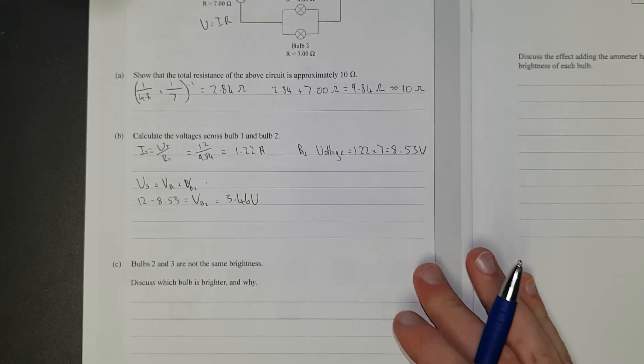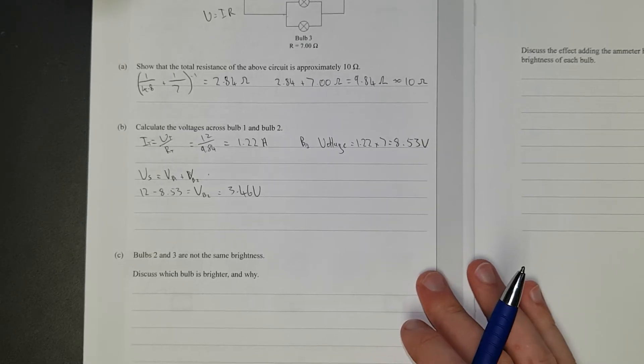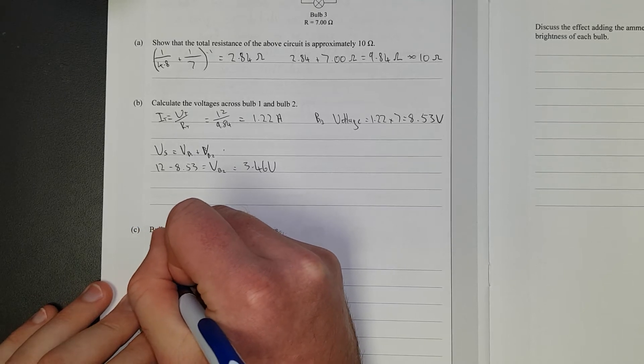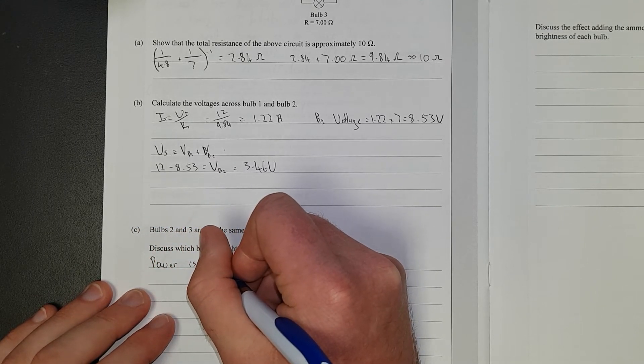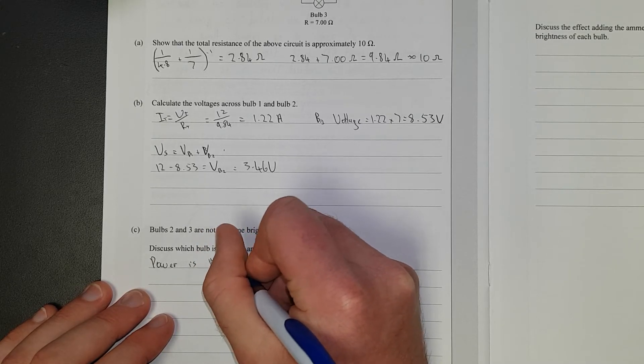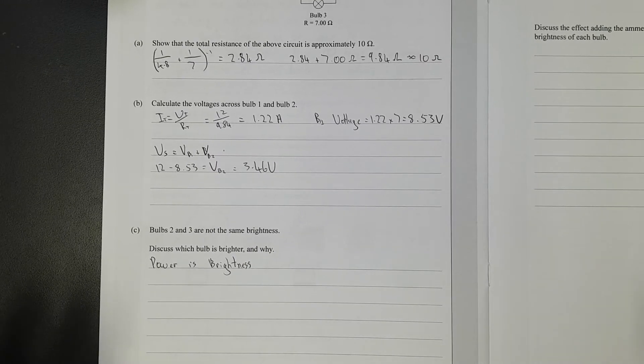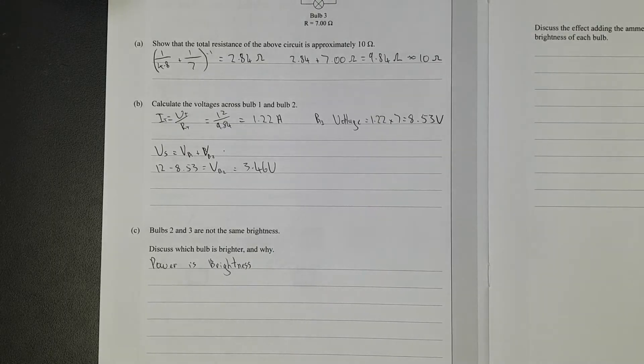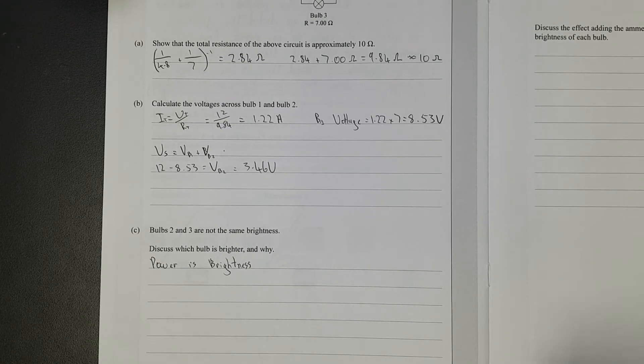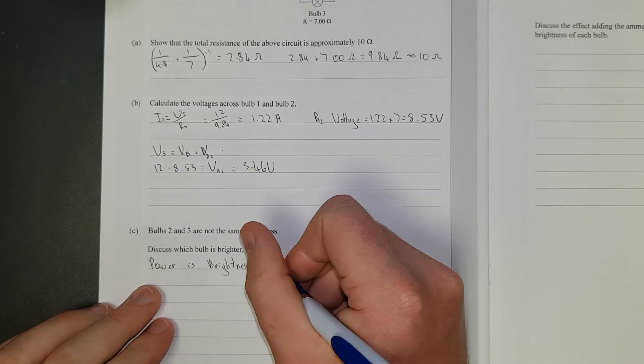Right. Bulbs 2 and 3 are not the same brightness. Discuss which bulb is brighter and why. Right, I'll just put like a blanket statement: Power is brightness. According to level 2 physics, it's not actually like in real life. If you buy LEDs, it's completely not the case at all because you've got efficiencies to take into account. But for level 2, power is brightness. That's the rule.